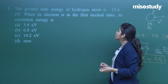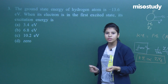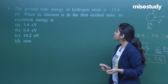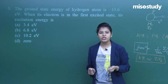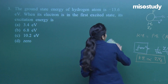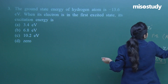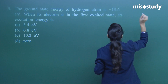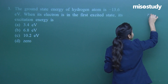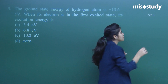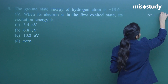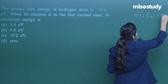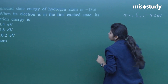Question 3: The ground state energy of hydrogen atom is minus 13.6 eV. When its electron is in the first excited state, its excitation energy is what? Ground state is N=1 with energy minus 13.6 eV. First excited state is N=2. We need to find E2 using the formula E = minus 13.6 upon N square, so E2 = minus 13.6/4 = minus 3.4 eV.